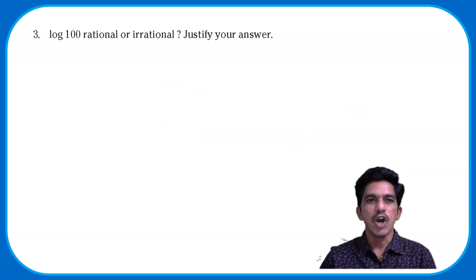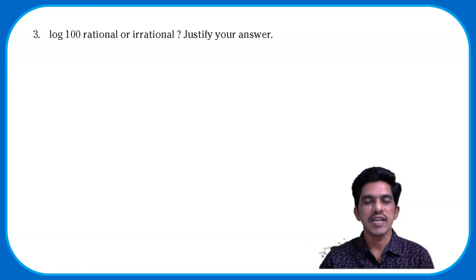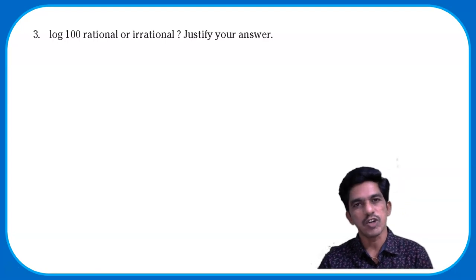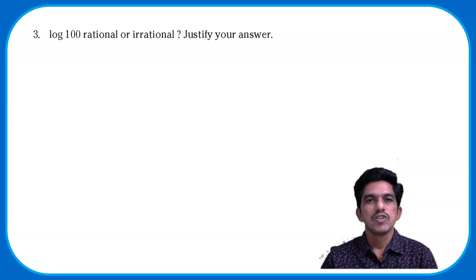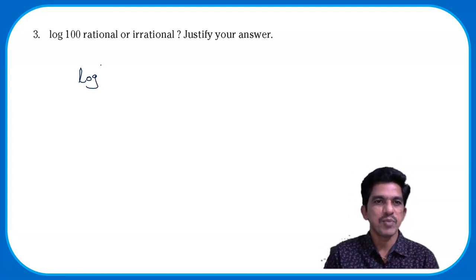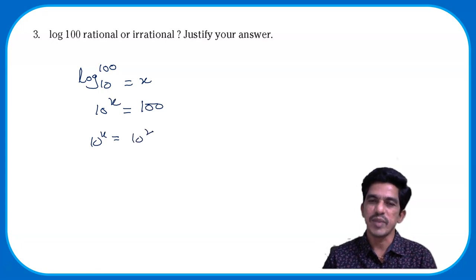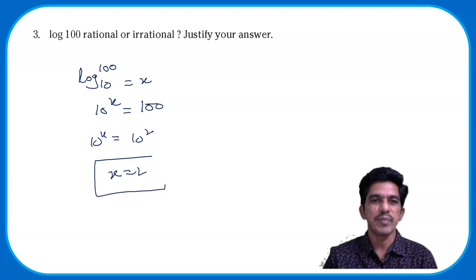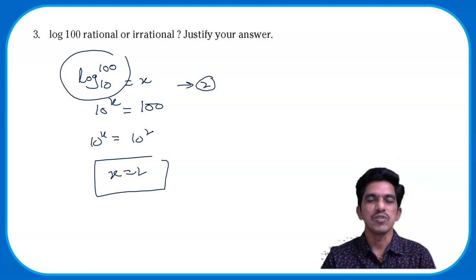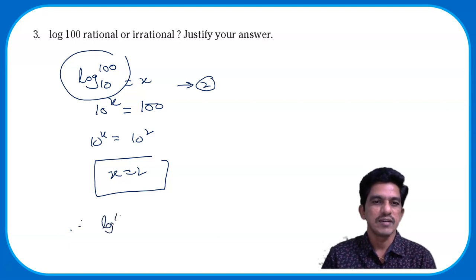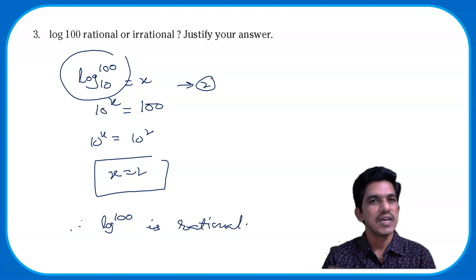Now look at question 3: is log 100 rational or irrational? Since no base is given, we take it as base 10. Let log 100 = x, so 10^x = 100 = 10². Since the bases are equal, the exponents must be equal, so x = 2. Since 2 is an integer and every integer is a rational number, log 100 is a rational number.